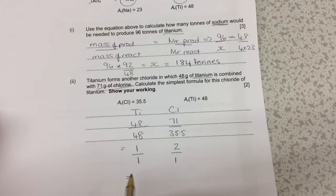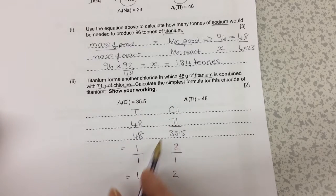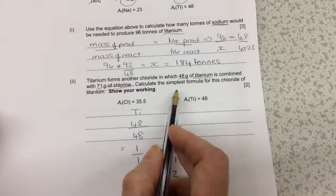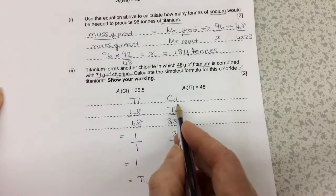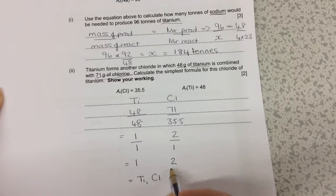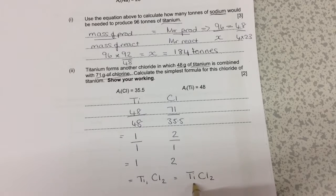Divide by the smallest number, which gives you the simplest whole number ratio of titanium to chlorine. Therefore, the simplest formula would be titanium one and chlorine two. To make this simpler, we normally ignore the number one, so it would become TiCl₂, and that would be our simplest formula.